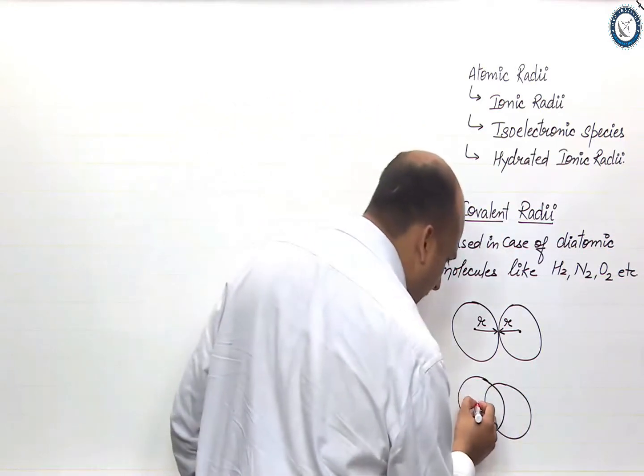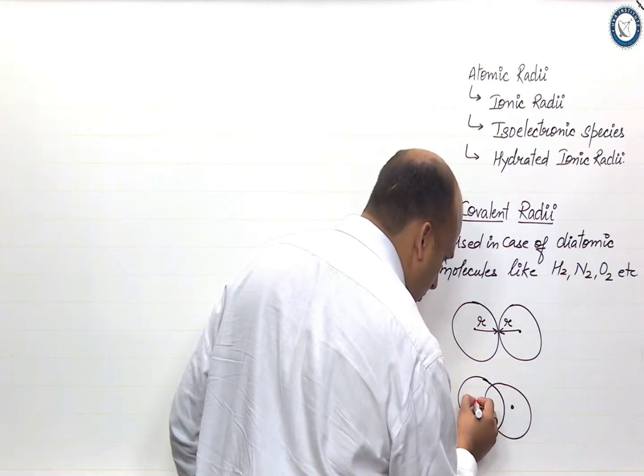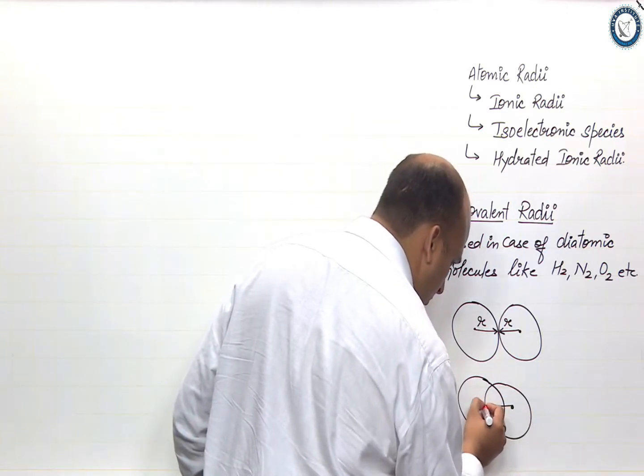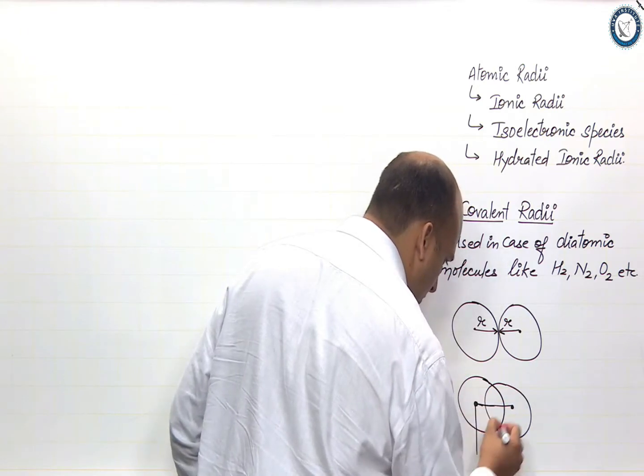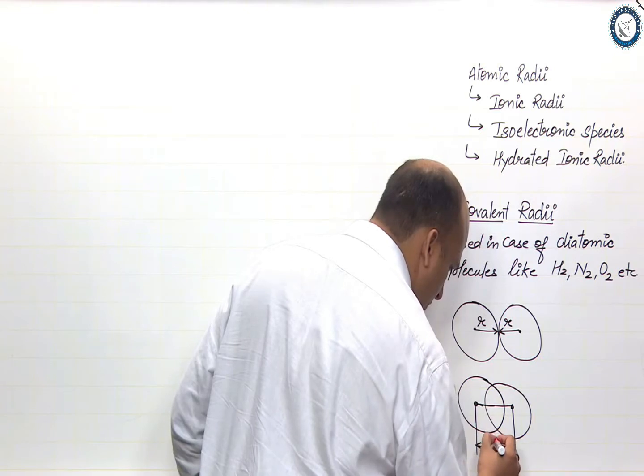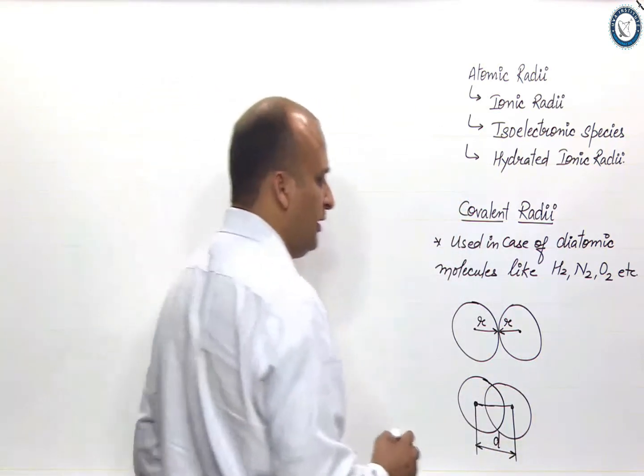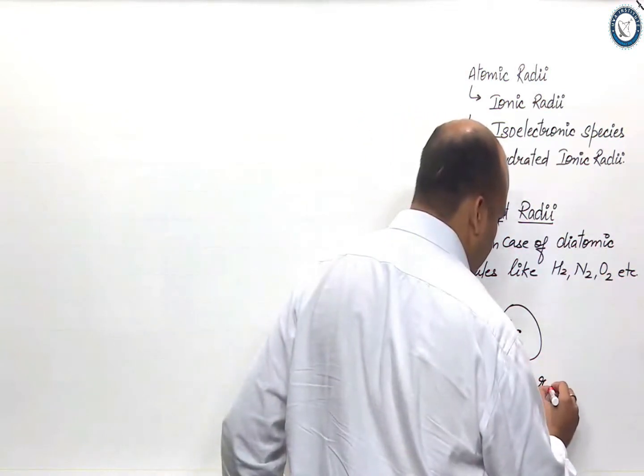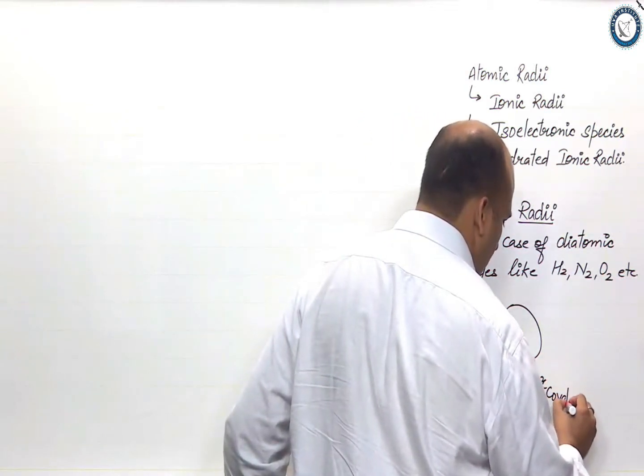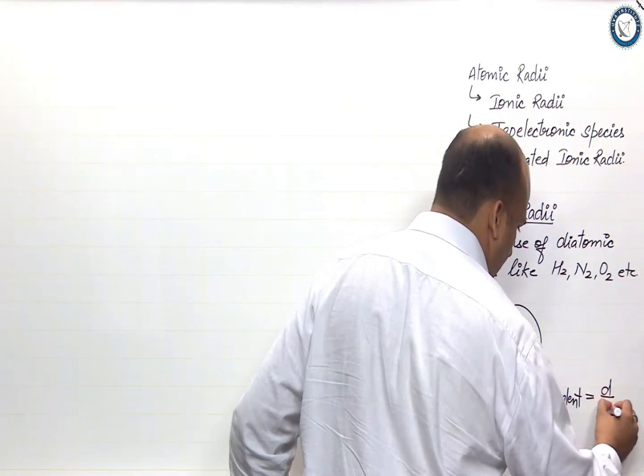So when they overlap, this is the distance between the two nucleus, we call it as d, ok. So the covalent radii will be d by 2.